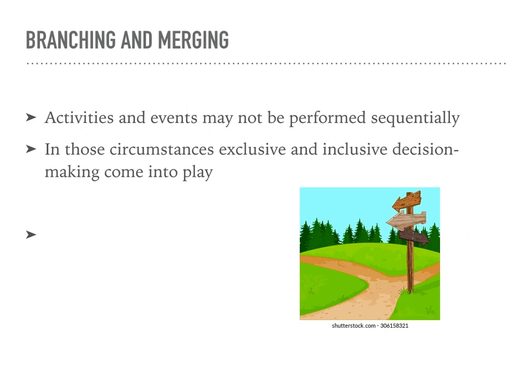In summary, exclusive decisions in BPMN allow for selecting a single path based on mutually exclusive conditions, while inclusive decisions enable the selection of multiple paths simultaneously based on their respective conditions. The choice between exclusive and inclusive decisions depends on the nature of the decision point and the desired behavior of the process at that particular point.